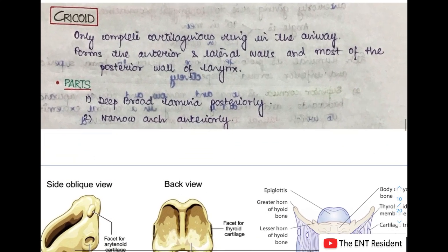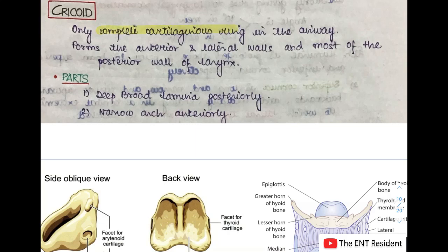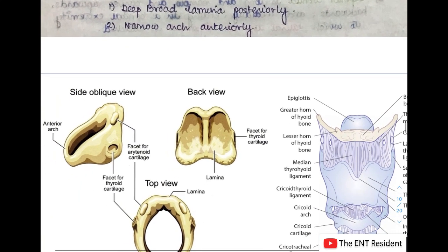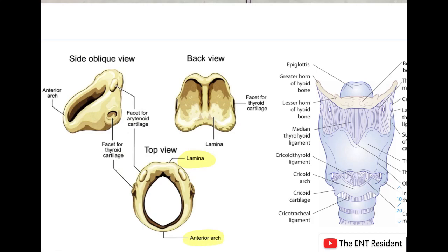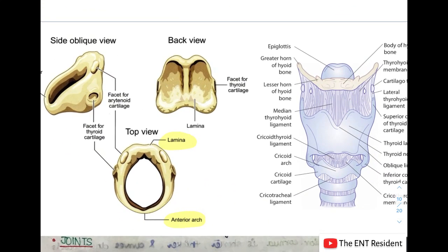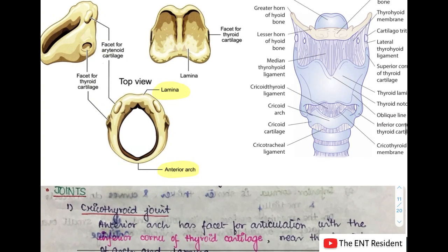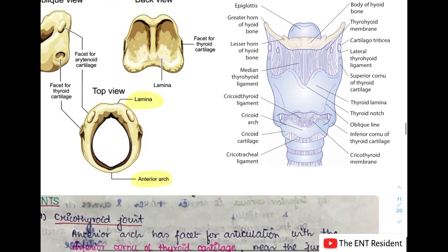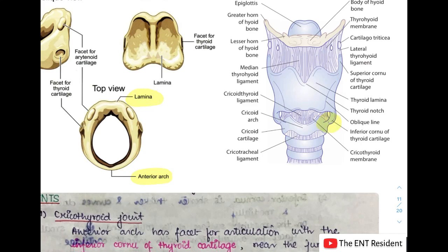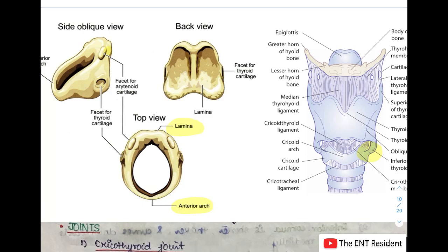The cricoid cartilage is the only complete cartilaginous ring found in the airway — unlike the thyroid and epiglottic cartilages, it forms a continuous ring. It forms the anterior, lateral, and most of the posterior wall of larynx. It has a deep broad lamina located posteriorly and a narrow anterior arch. The cricoid cartilage forms two joints: the cricothyroid joints and the cricoarytenoid joints, with the respective facets present on the cricoid.